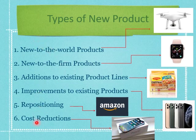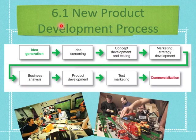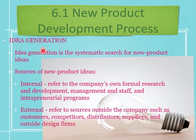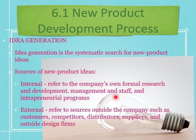Now let's move on to the new product development process, which is very important. This applies whether you're creating a product new to the world or an improvement of a previous one. It involves eight steps from idea generation to commercialization. Step one is idea generation — a systematic search for new product ideas. Sources can be internal, such as the company's own research and development, management, staff, and intrapreneur programs, or external, such as customer feedback, competitor analysis, distributors, and suppliers.